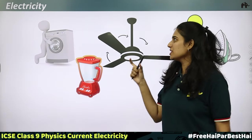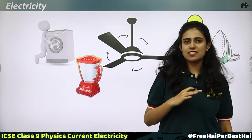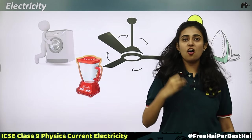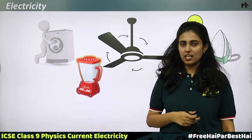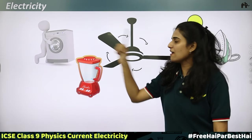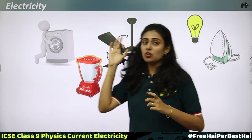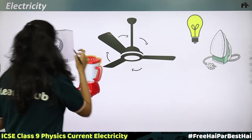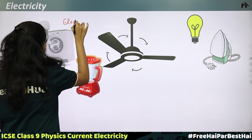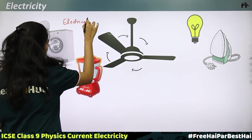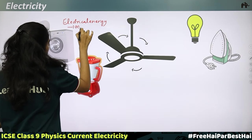Electricity is a word that we use in our day-to-day life. Can you imagine a world without electricity? You can see many devices here. All these devices run based on electricity — they are all dependent on electricity. First, we have a washing machine. When you switch it on, there is electrical energy, and this electrical energy gets converted into mechanical energy.